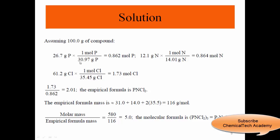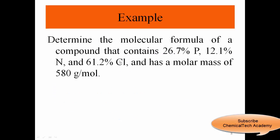One mole of P is 30.97 grams P, so we have 0.862 moles of phosphorus per one mole of this compound. We do the same thing for nitrogen.